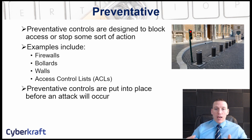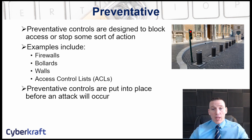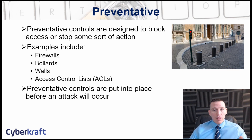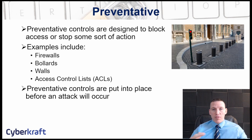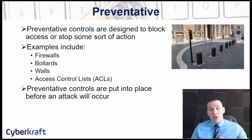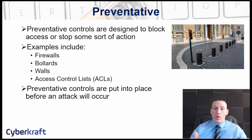For preventative controls, you would conduct threat analysis, identify threats affecting your organization, and develop preventative controls to mitigate those threats. A technical preventative control would be something like a firewall; a physical preventative control would be bollards; an access control list would also be a technical preventative control. An acceptable use policy would be an operational preventative control. Controls can fall into multiple categories — for example, a wall or fence could be both a preventative and a deterrent physical control.